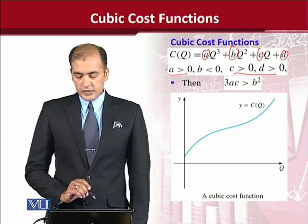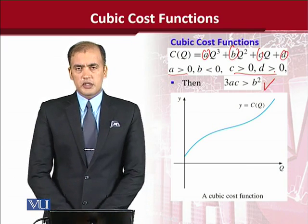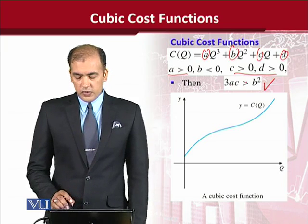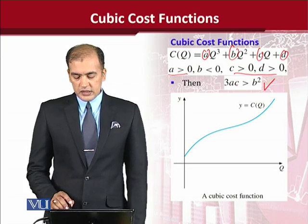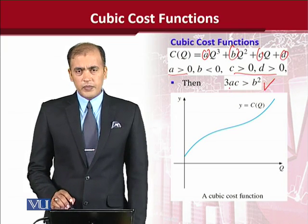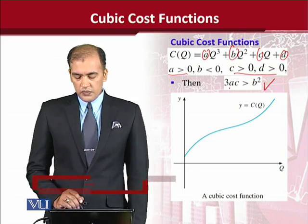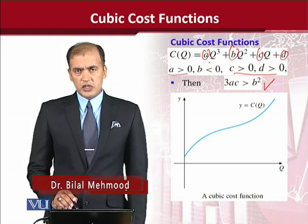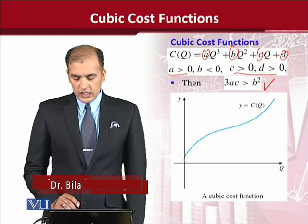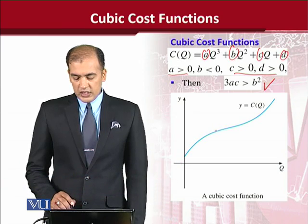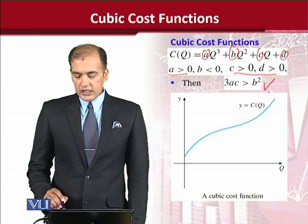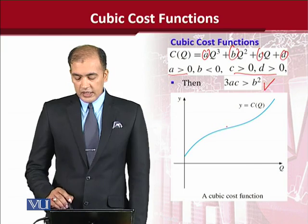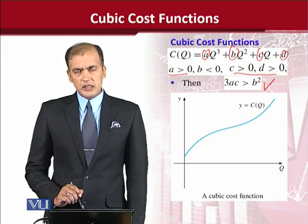Once this happens, the cubic function should follow a specific condition. Before we verify that, let us see how it will look. Such a cost function that follows these parametric restrictions will have a decreasing trend in the beginning and then an increasing trend — or more precisely, it will be increasing at a decreasing rate firstly, and then increasing at an increasing rate.